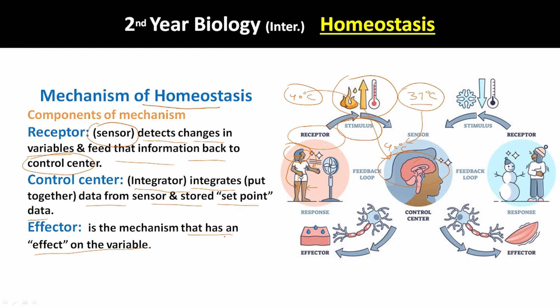Let's see the homeostatic mechanism. Suppose there is cold outside. Your body senses the temperature in the form of receptors, and these receptors message your brain that it is cold outside and you have to protect yourself. Your brain, the control center, sends a message to your effectors to respond to the cold in your environment. Your effectors take action — putting on clothes to bring your body temperature back to normal.